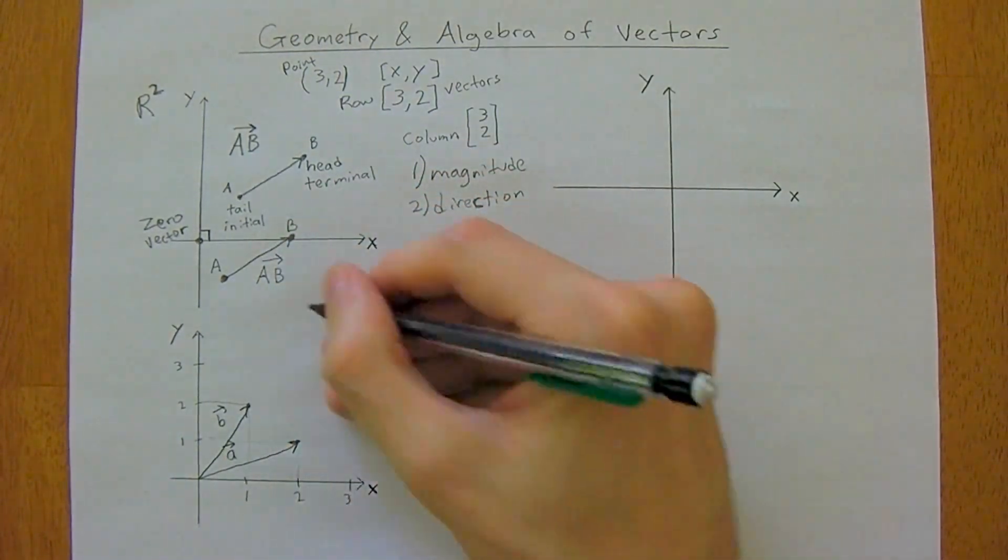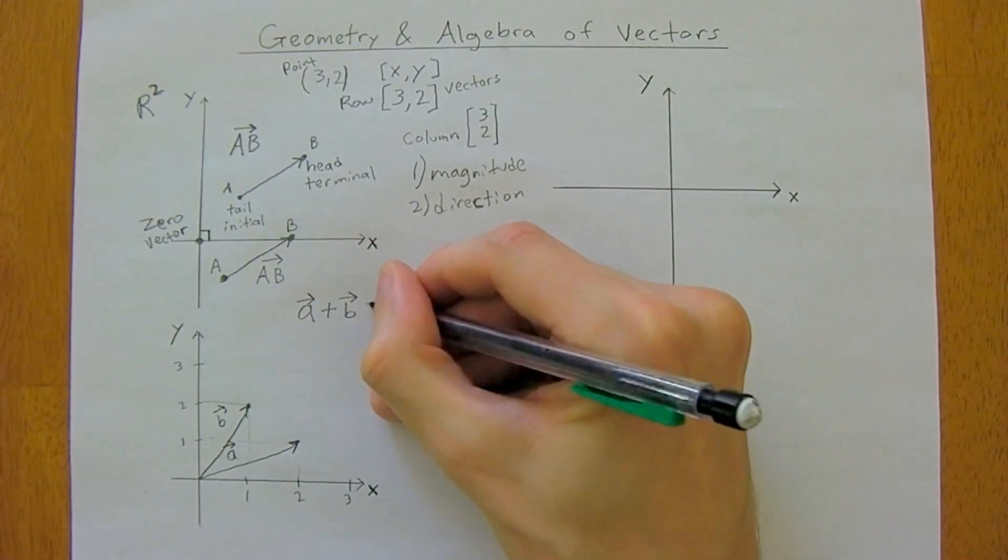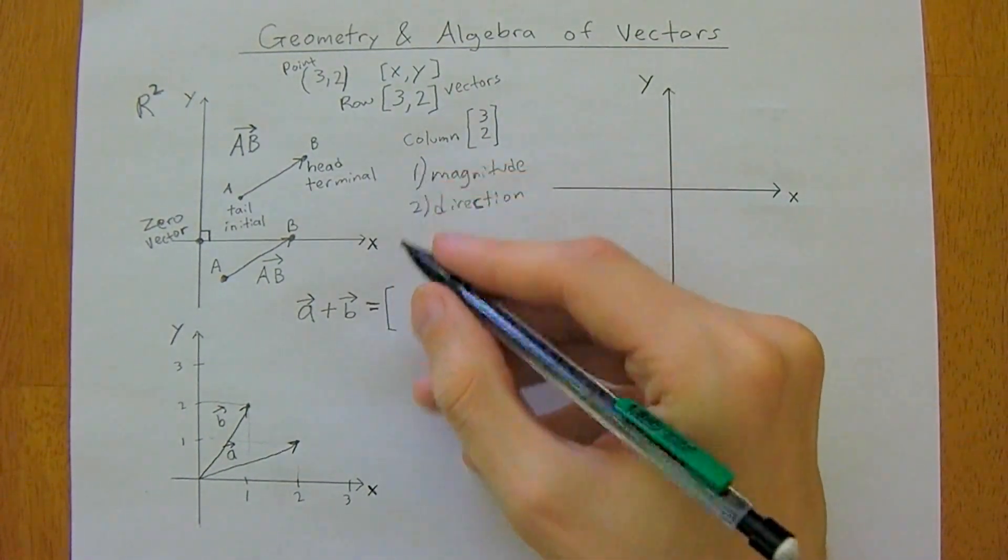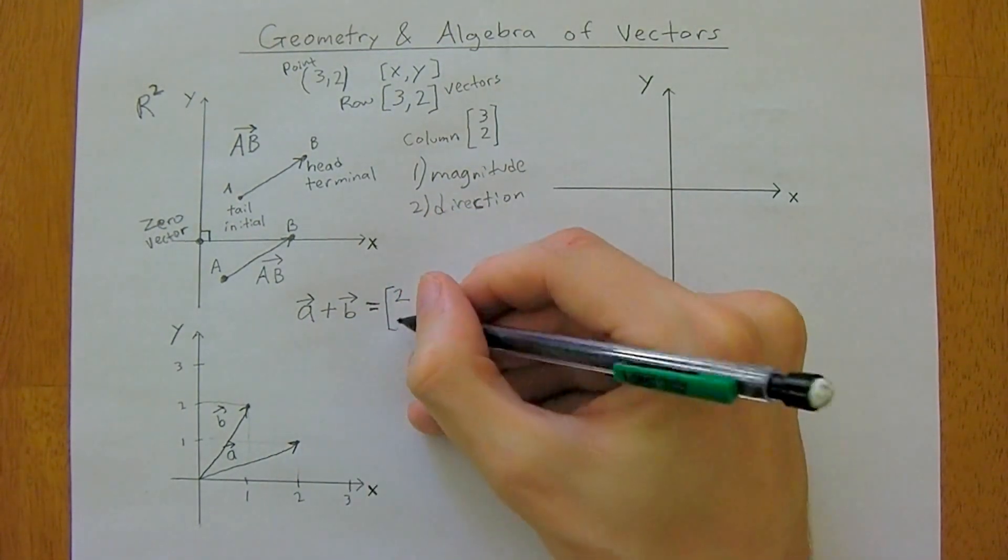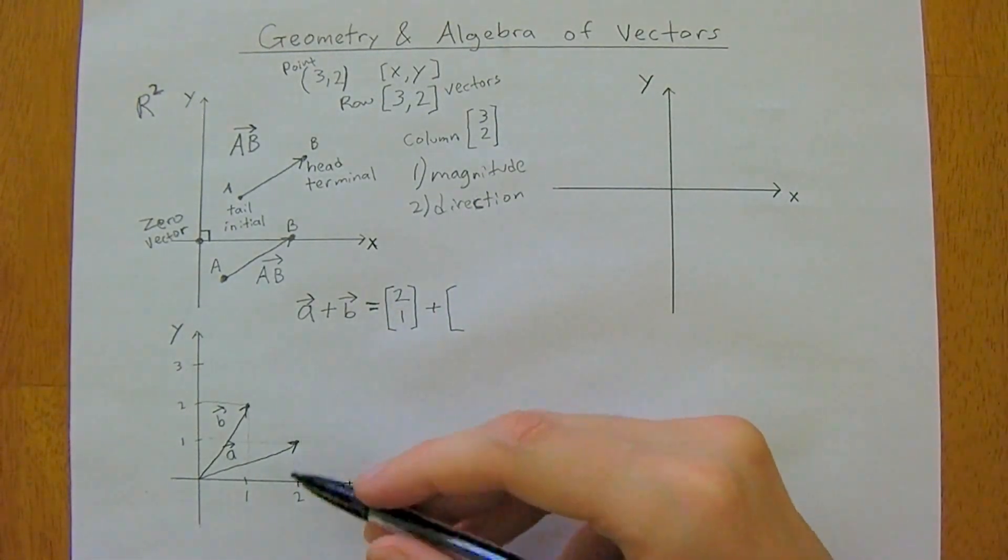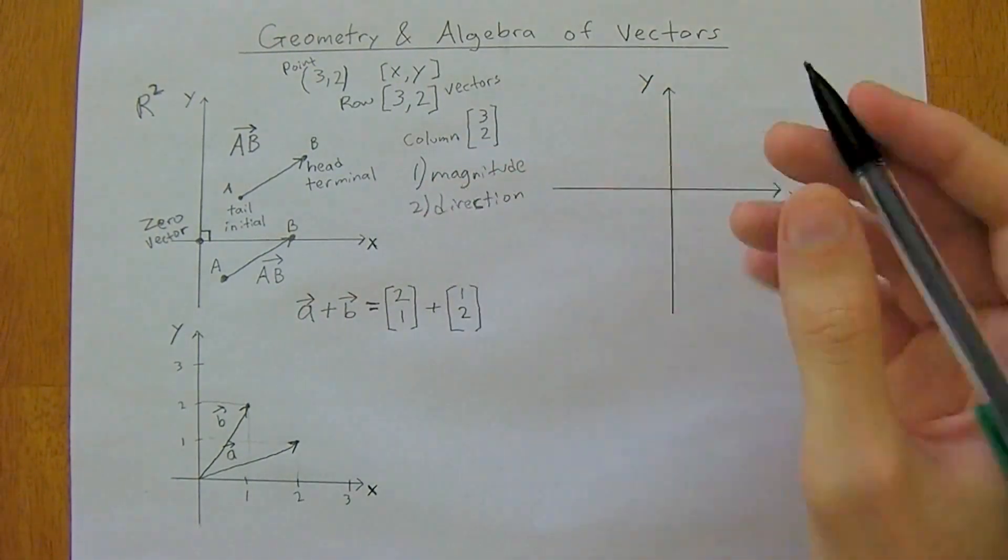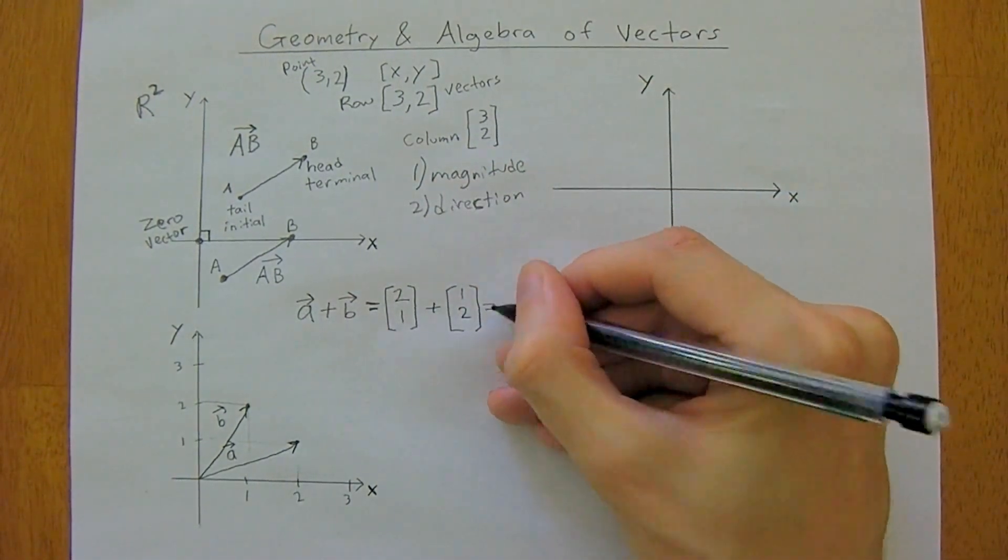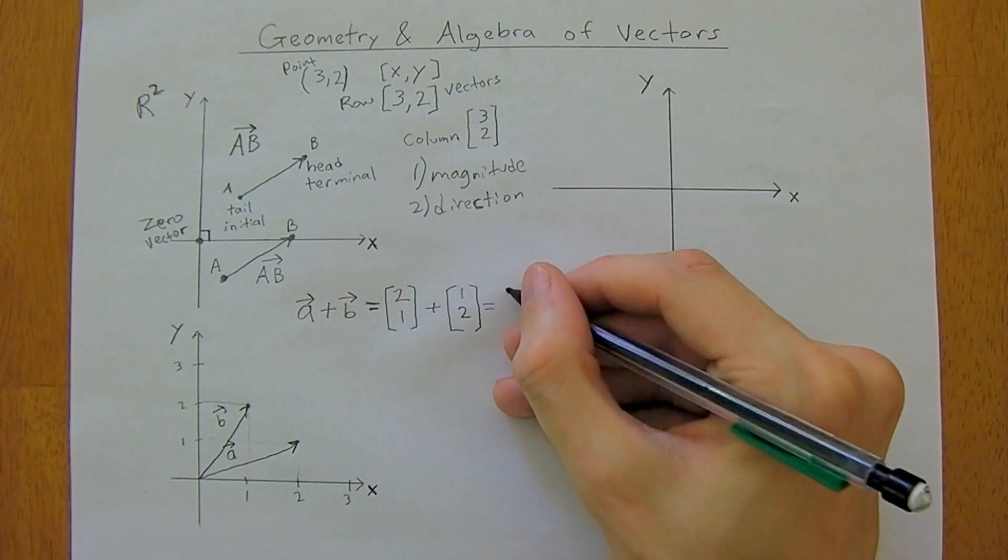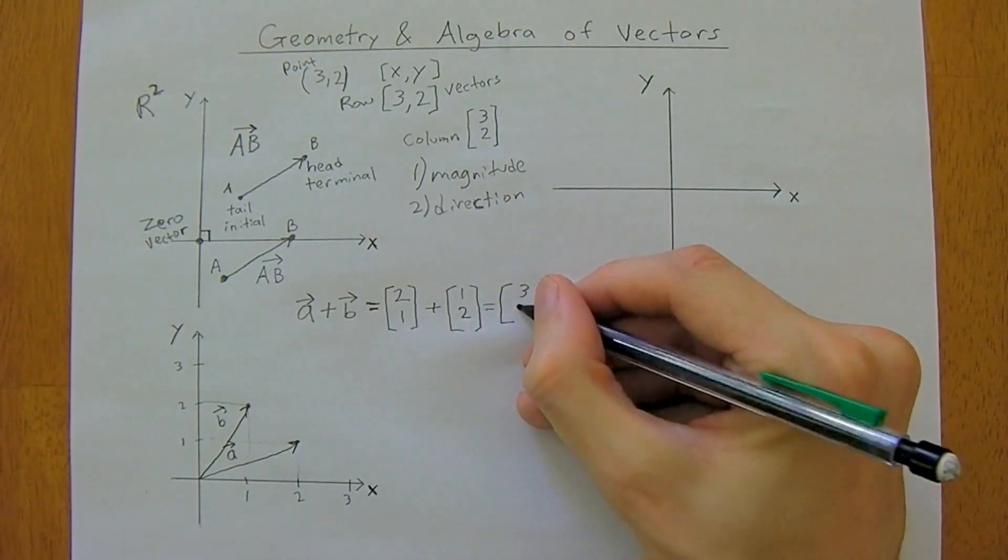Let's say we wanted to add the two of them, so we want to do vector a plus vector b. This is going to just be equal to, let's work with column vectors. So a is [2, 1], plus b which is [1, 2]. It's pretty straightforward, just simple addition. You add up the x components first, so 2 plus 1 is 3, and then you add up the y components, so 1 plus 2 is 3.